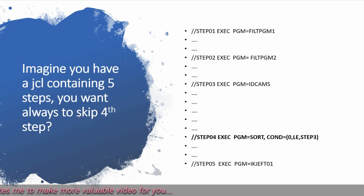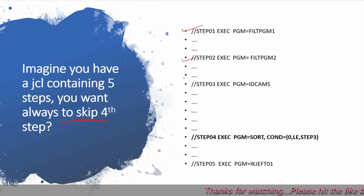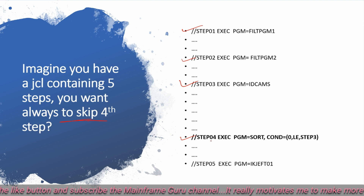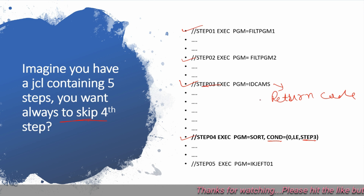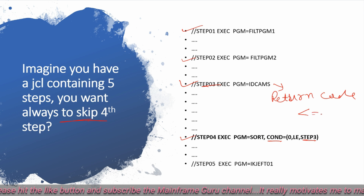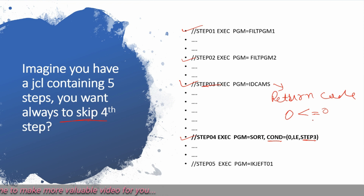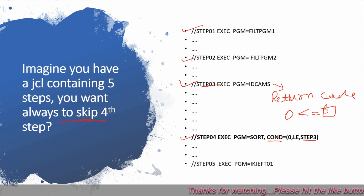If you have a JCL with five steps and you always want to skip step four, you can use the COND parameter equal to (0,LE,STEP03). Whatever return code is thrown from step 03 will be greater than or equal to 0, so this condition will always become true and step four will always be bypassed.